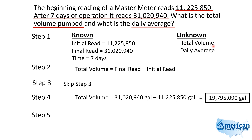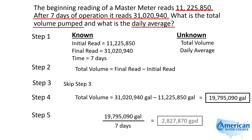Now we need to calculate the daily average. They told us that this volume was pumped over a seven-day period, so we simply divide that 19 million by seven days. So 19,795,090 gallons divided by seven days will give us our gallons per day, which gives us an answer of 2,827,870 gallons per day.